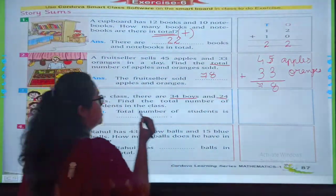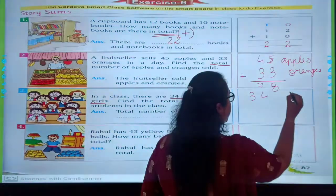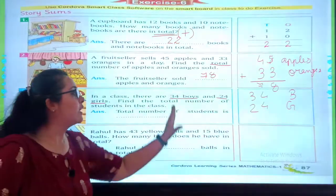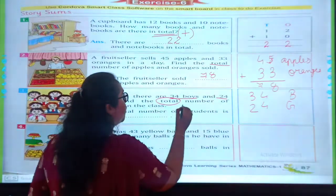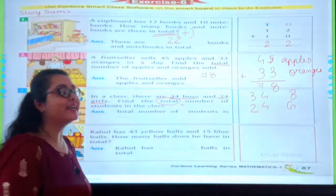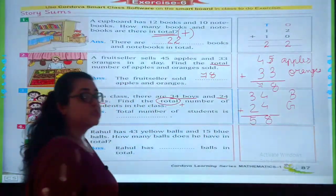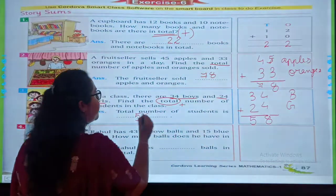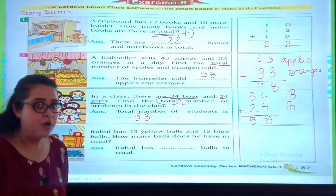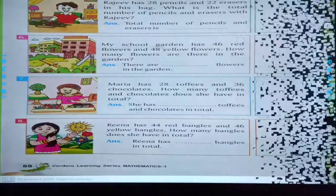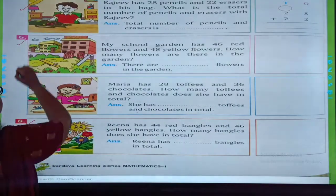Let's solve the third one. In the class, there are 34 boys and 24 girls. Find the total number of students. Again total. Whenever it comes total, we will add it. 4 plus 4 is 8. 3 plus 2 is 5. So I can say that total students were 58 in the class. Now it's easy enough. You can solve the remaining sums. You will be solving sum number 4, 5, 6, 7 and 8.